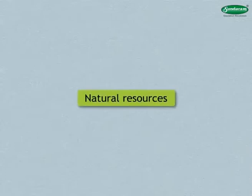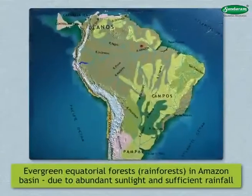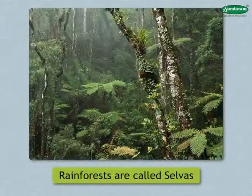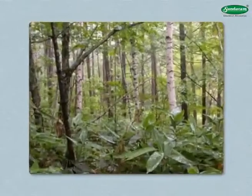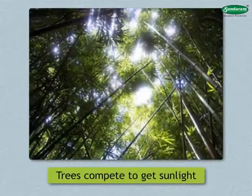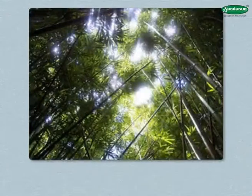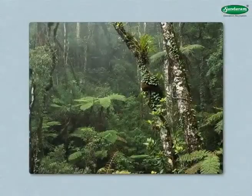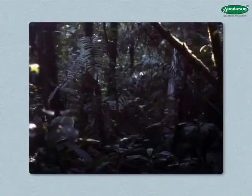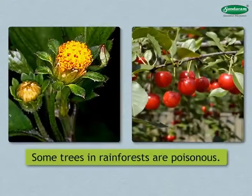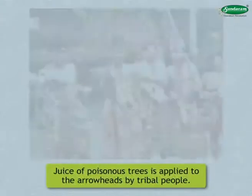Due to abundant sunlight and sufficient rainfall, we see evergreen equatorial forests in the Amazon Basin, called selvas. The trees are broad-leafed and evergreen. Tree density is so high that the trees compete to get sunlight, causing them to grow very tall — some as tall as 90 meters. Sunlight does not reach the ground as branches block its penetration, making the lower portions dark. As a result, only parasite plants are found in this zone. Some trees are poisonous, and tribal people used to apply their juice to arrowheads for hunting.